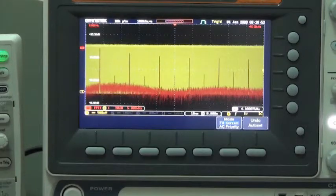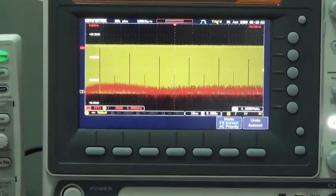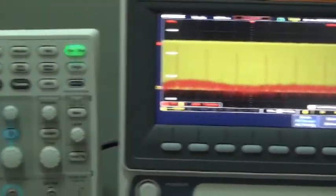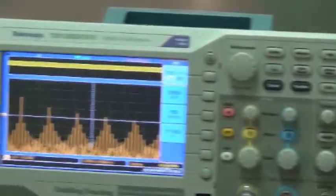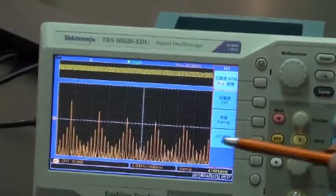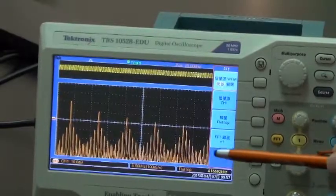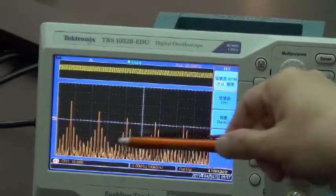For TBS-1000EDU, due to its insufficient retrieving points, the overall waveform display is very rough, and the even number of harmonics cannot be seen.